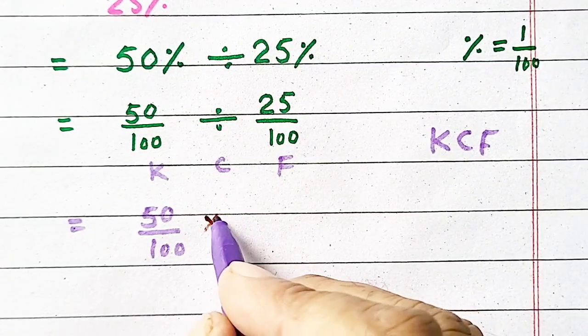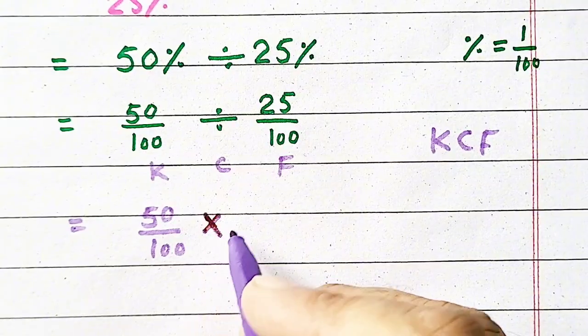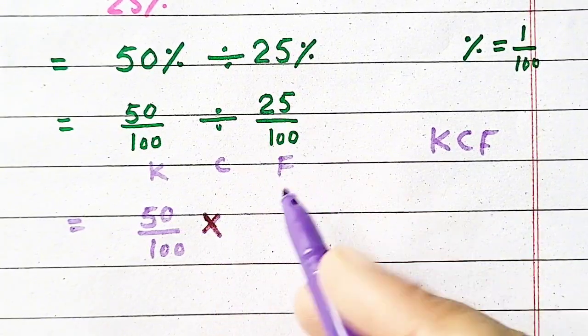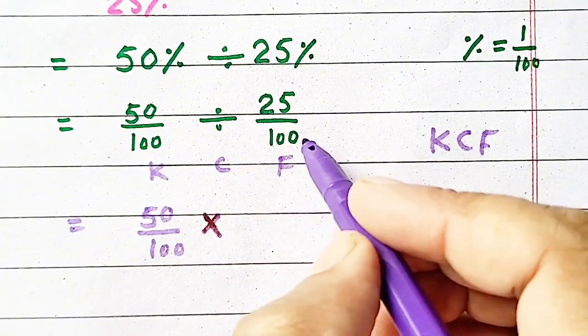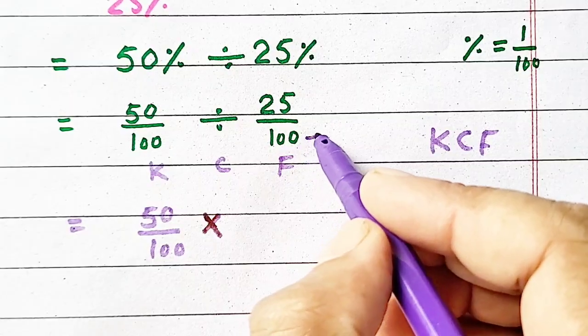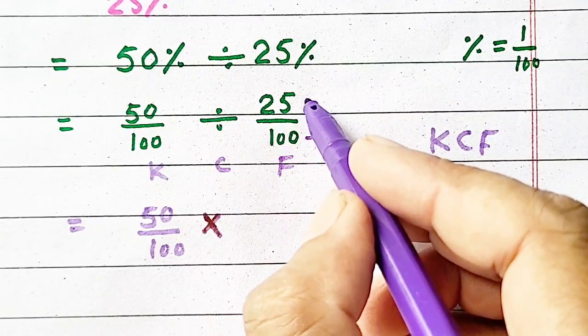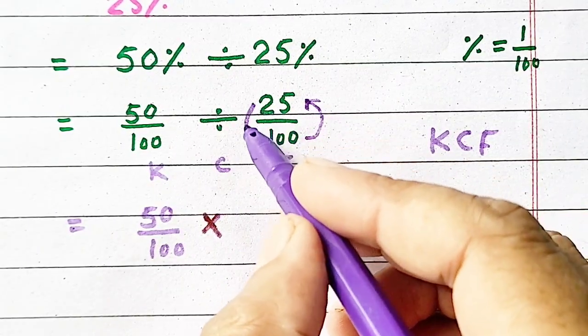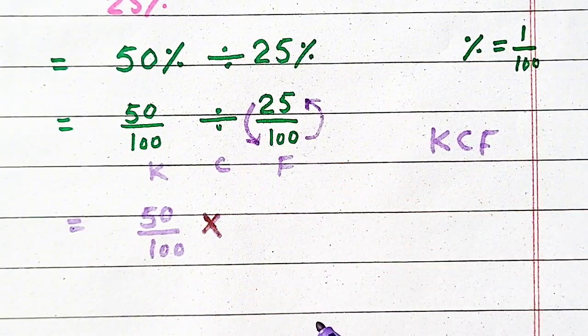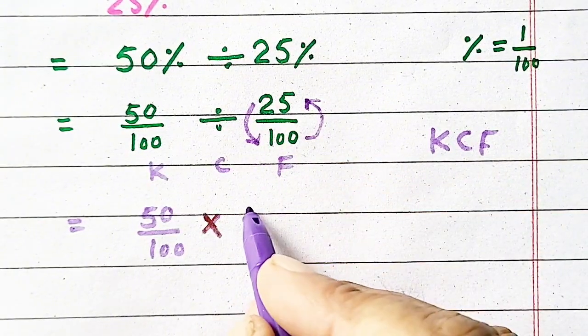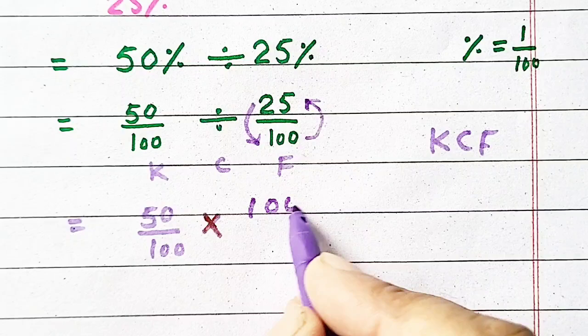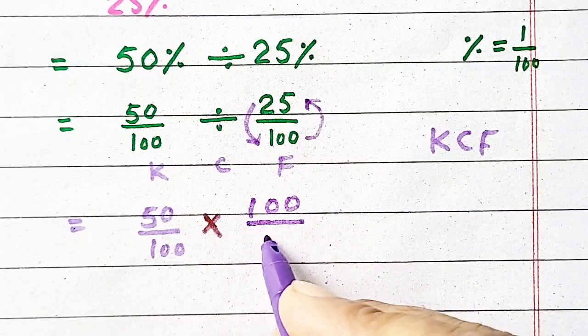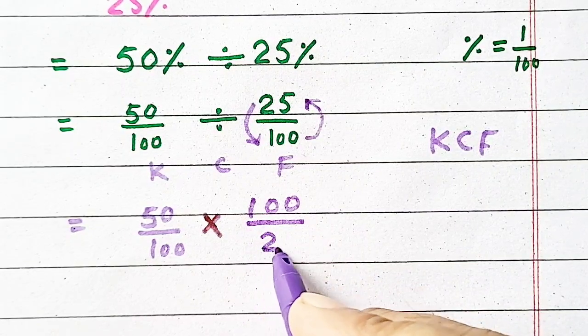So it will be multiplied, and flip it means denominator will be converted into numerator and numerator will be at the place of denominator, so it will be 100 divided by 25.